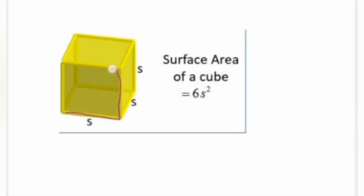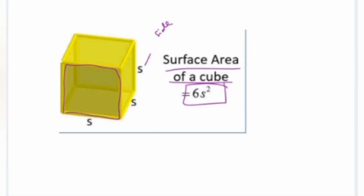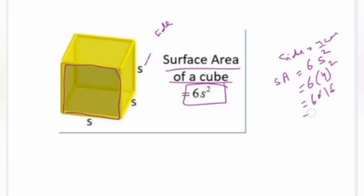The surface area of the cube — where all sides are equal — is 6 × side². For example, if the cube has side 4 cm, then surface area = 6 × 4 × 4 = 6 × 16 = 96 cm².